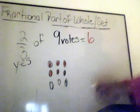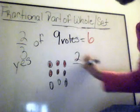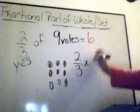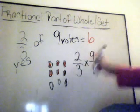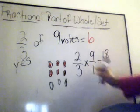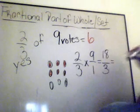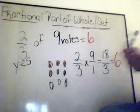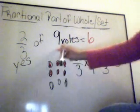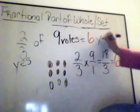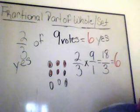Now, the same way we did the first problem with numbers, we do it with this one as well. Two-thirds times nine over one. Two times nine is 18, three times one is three. Eighteen divided by three is six. So how many votes were yes? Six votes — six out of the nine votes voted yes. This is how you solve fractional parts of a whole or a set.